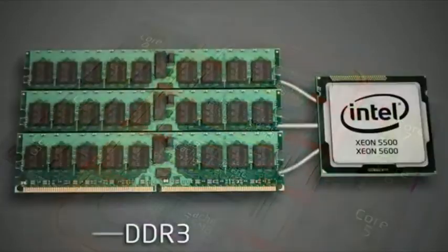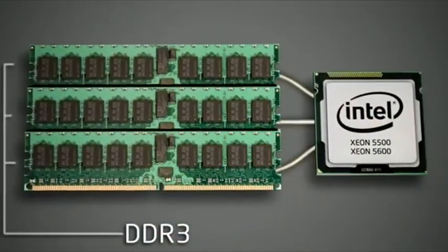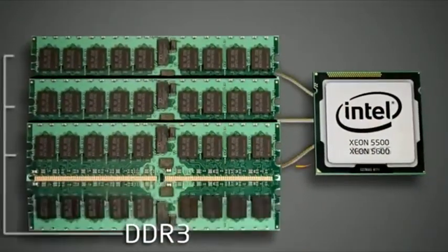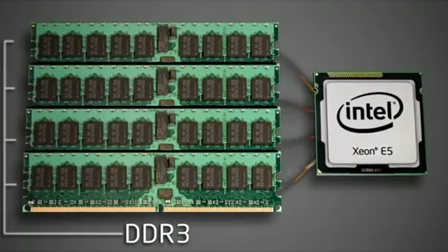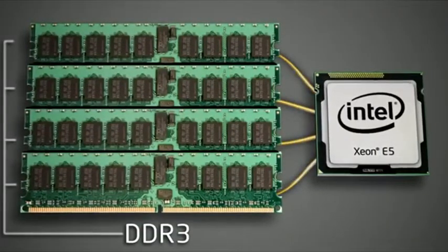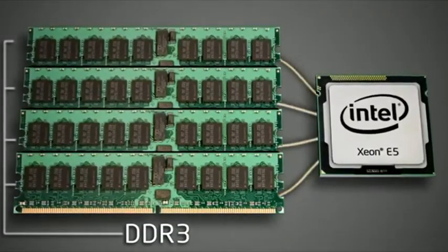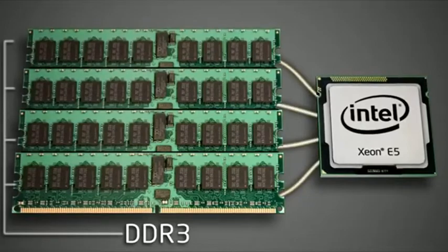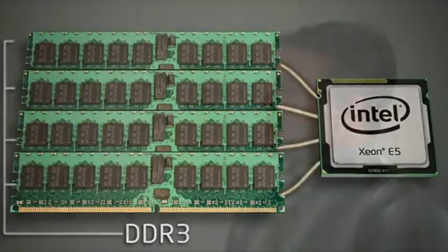The second attribute of bandwidth is memory bandwidth itself. We went to four channels of DDR on this particular microprocessor, giving us a 33% bump up in bandwidth.